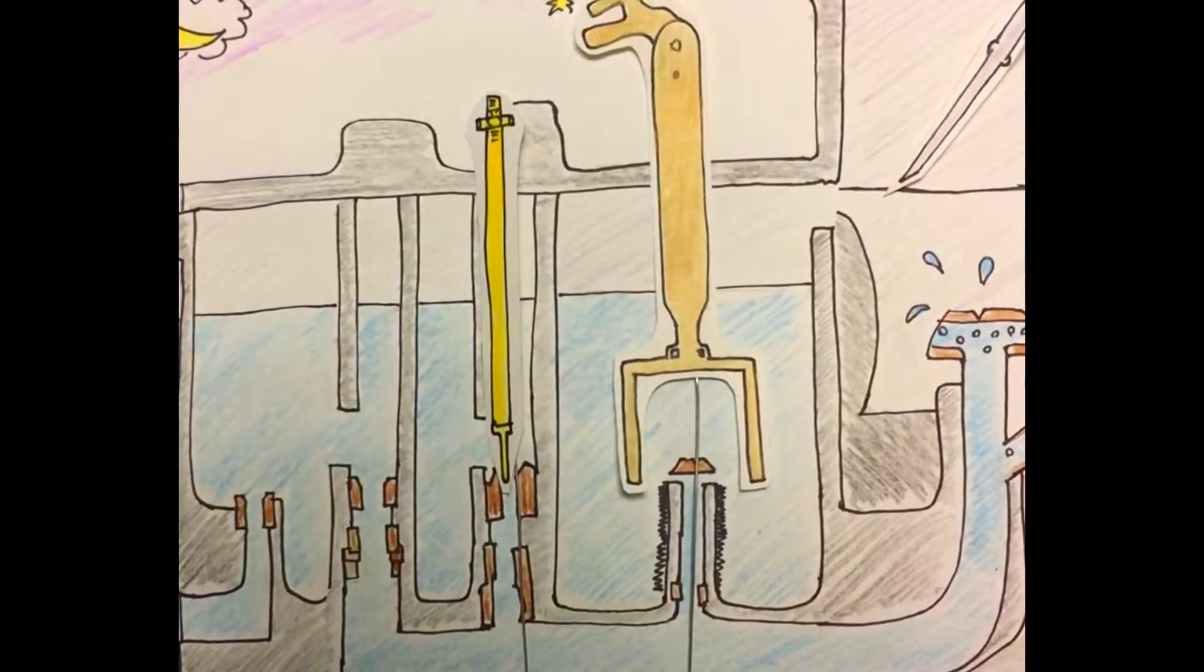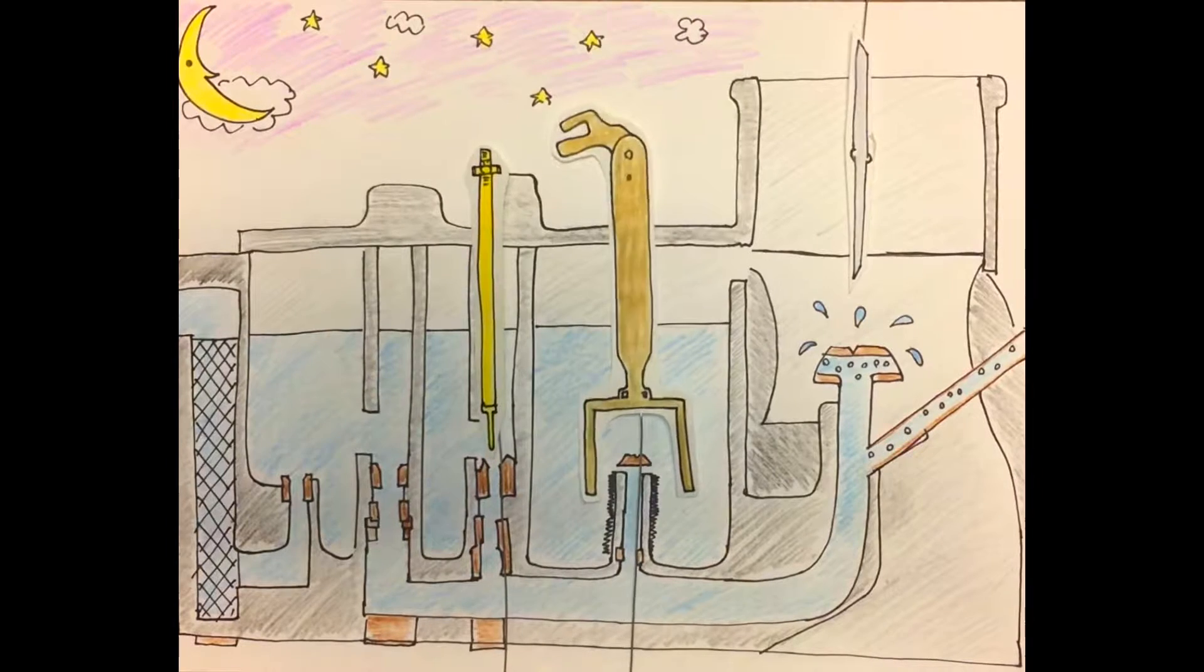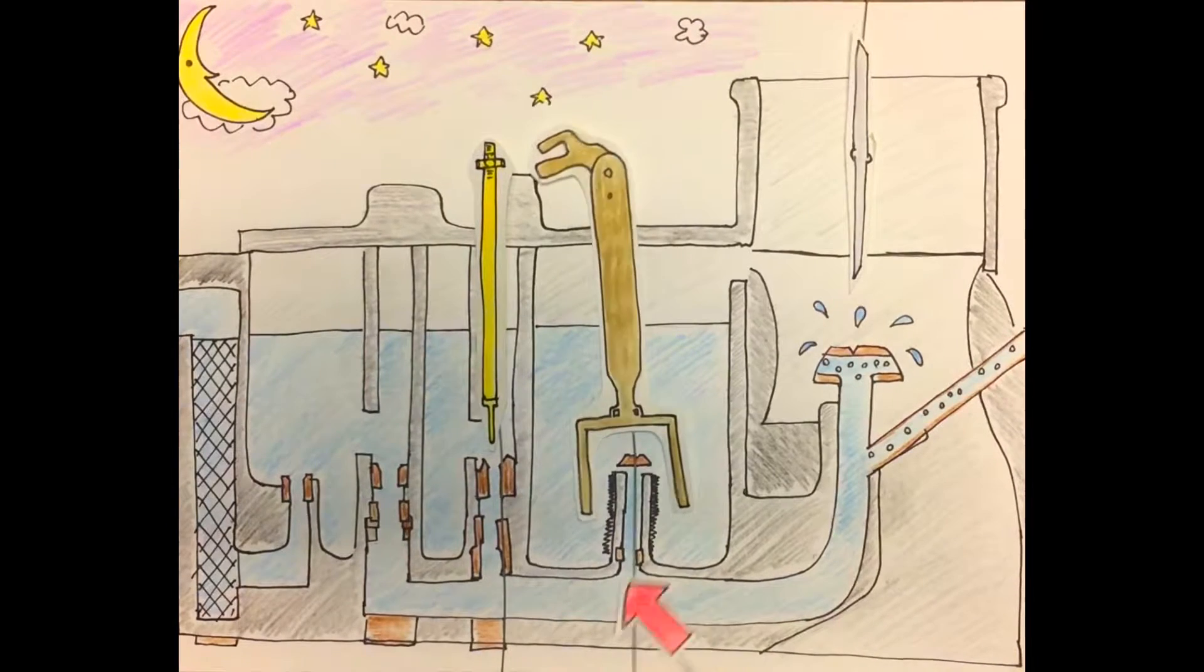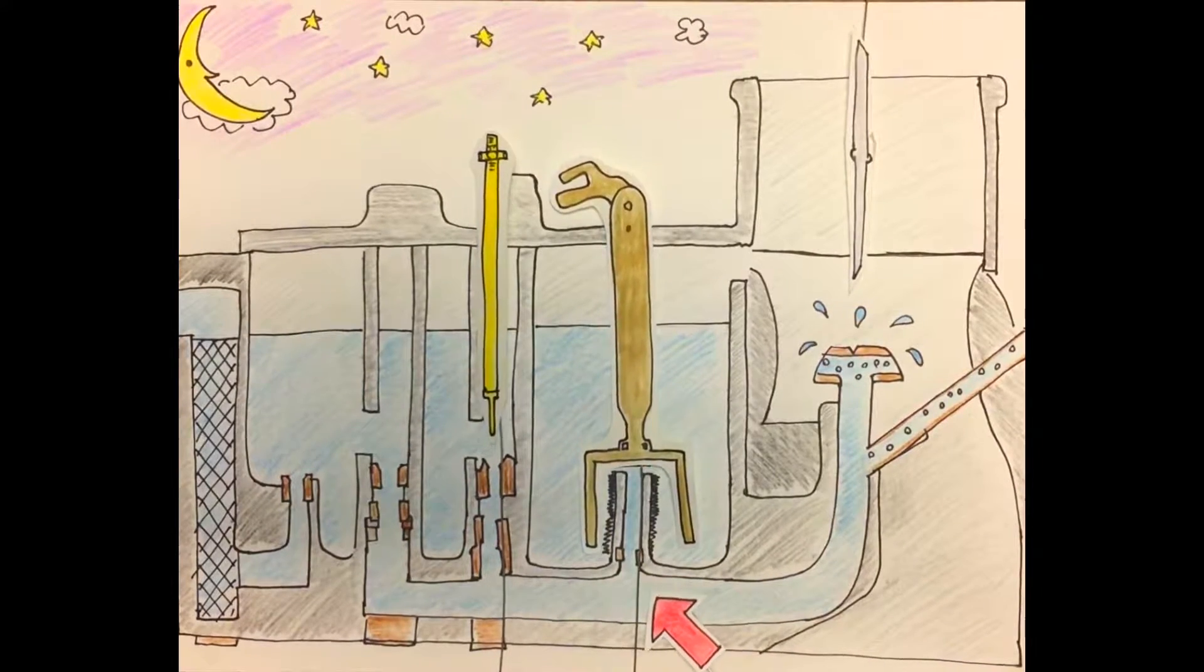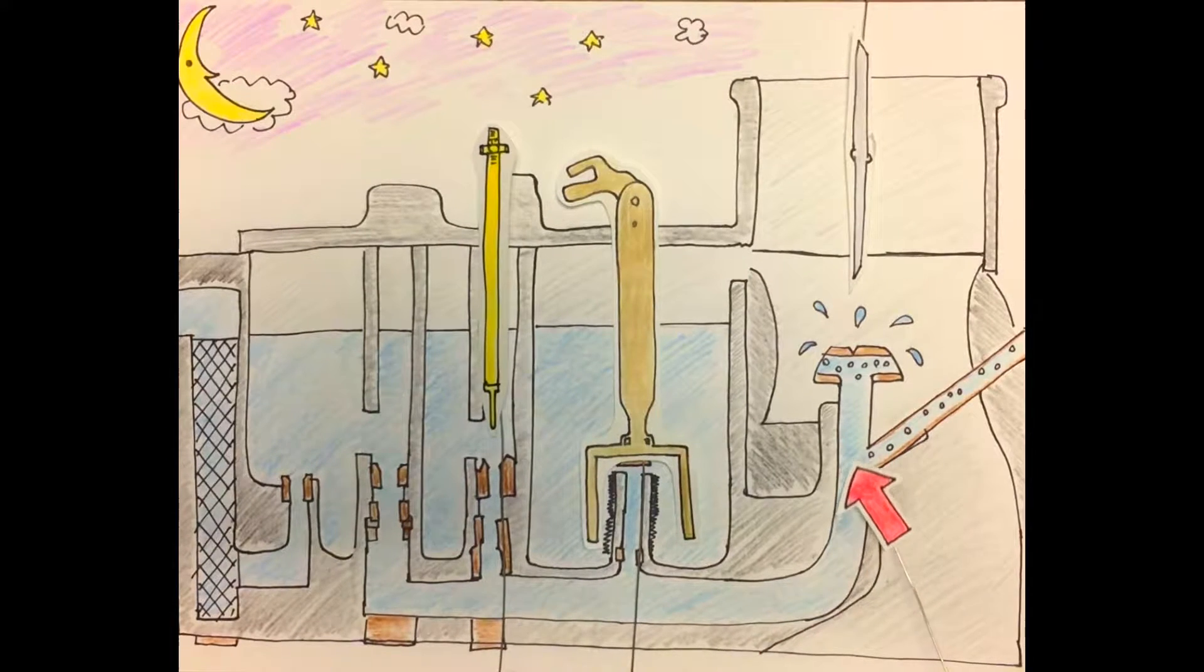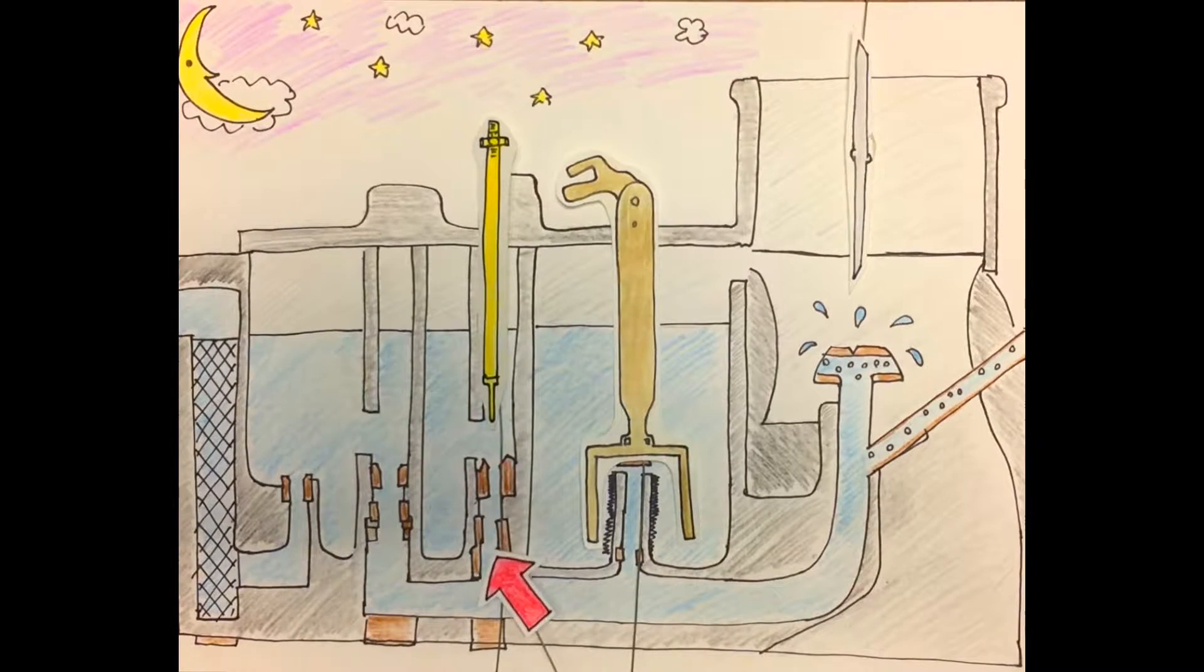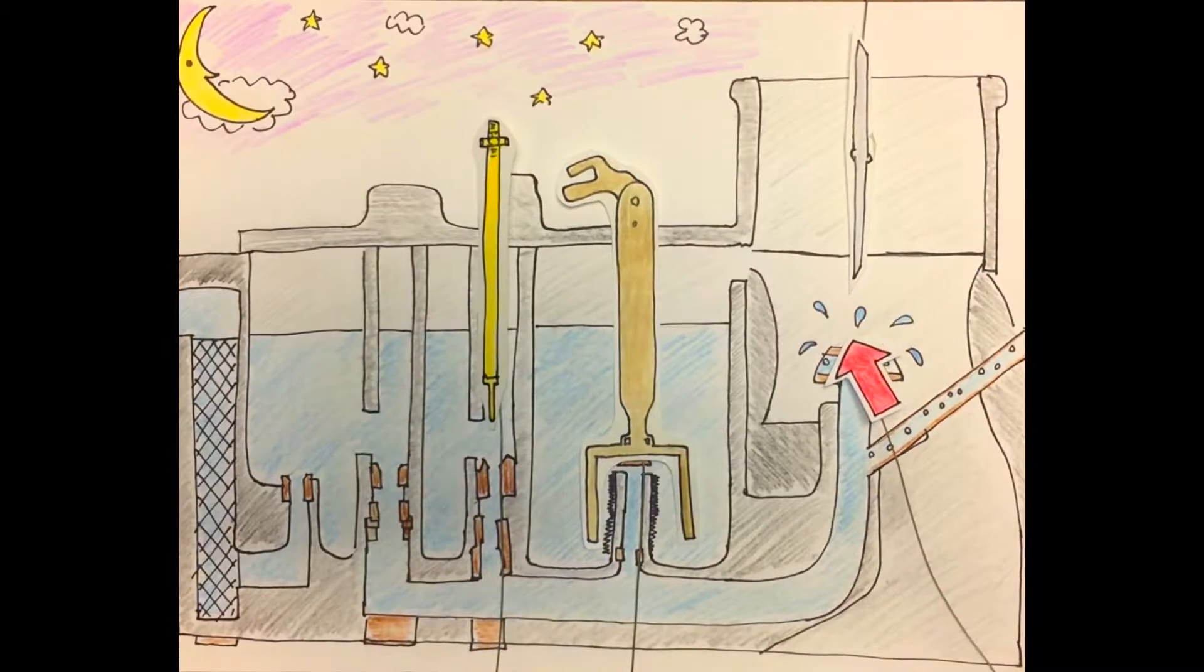When the throttle lever is at full throttle, the economizer unseats to provide a richer fuel-air mixture to help cool the cylinders and the acceleration pump comes down to provide more fuel. This makes it so the engine can accelerate smoothly and quickly until the discharge nozzle can deliver fuel at a rate that is proportional to the airflow rate.